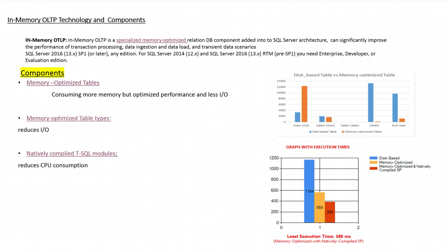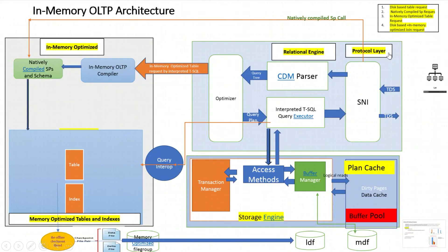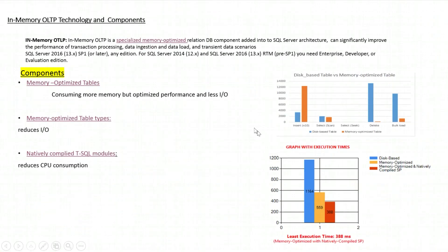In-memory OLTP is a specialized memory optimized relational database component added into the SQL Server architecture. When added, it improves data load, performance of transaction processing, data ingestion, and transient data scenarios. It was introduced in SQL Server 2014 (12x), then SQL Server 2016 (13x) RTM in the Enterprise and Developer editions, but after that this component became available in all editions.